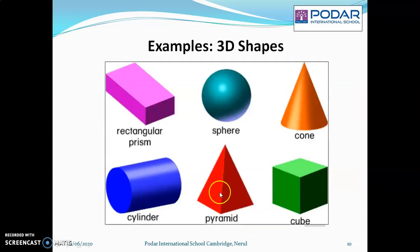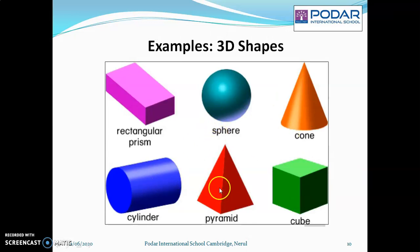Now these are a few examples of 3D shapes: cone, cube, cylinder, sphere, pyramid, a rectangular prism — which you also call as a cuboid.